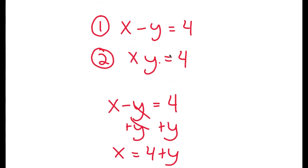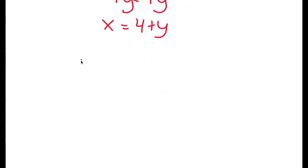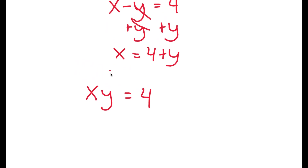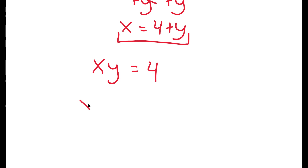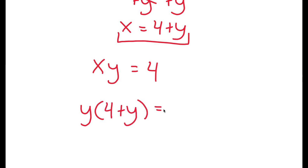Now from here, my second equation is x times y equals 4. What I'm going to do is plug in this value of x into this equation. So x equals 4 plus y, so I'm going to plug 4 plus y in and I get y times 4 plus y is equal to 4.